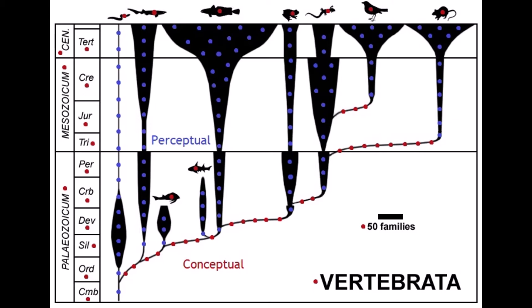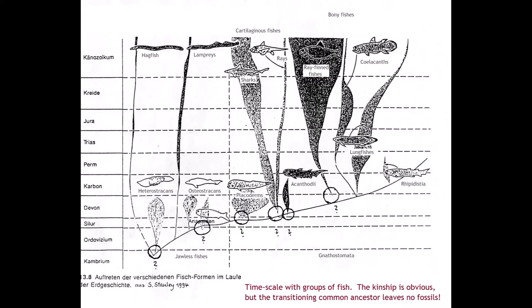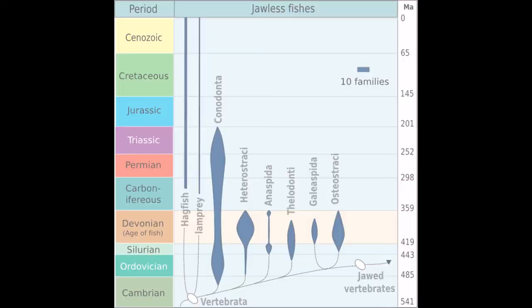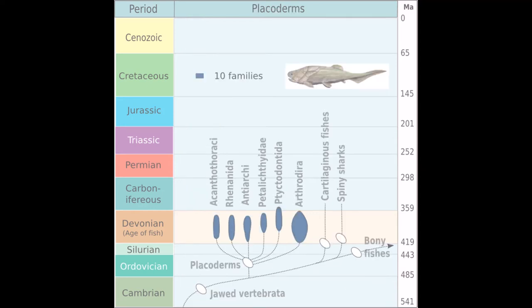Question: how does one class emerge out of another? Where are the transitional forms? Here is a close-up of a part of what was shown in the previous diagram. The transitional specimens are missing. Even those nice solid spindles turn out to have gaps when you zoom in on them.